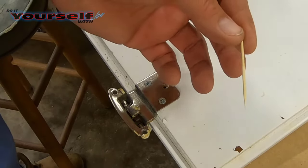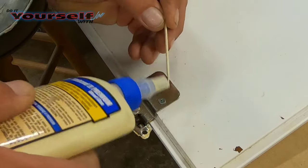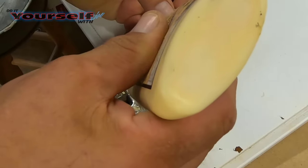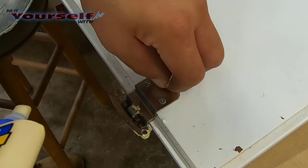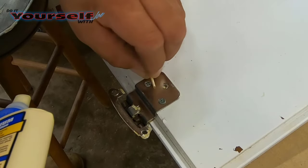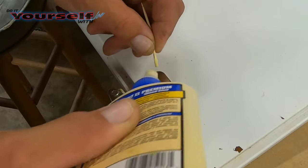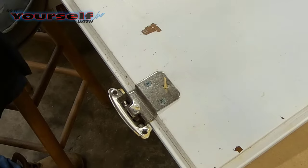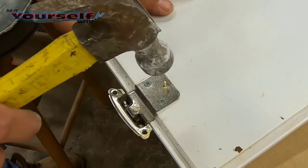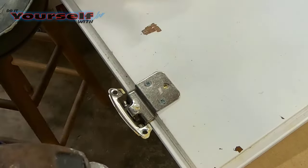The last method I have is round toothpicks. Use wood glue on the toothpick. Then push it into the screw hole and snap it off. Keep doing this until you can't fit any more toothpicks into the screw hole. The trick here is to wedge as many toothpicks into the hole as you can.